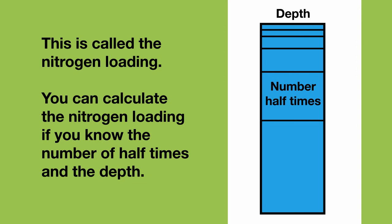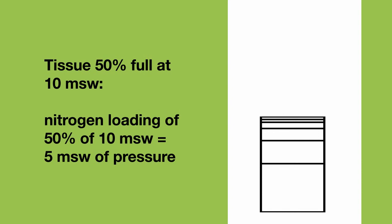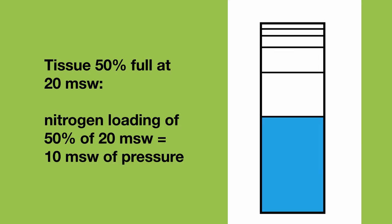Let's look at an example of how this works. A tissue that is half full, so 50%, at 10 meters of seawater has a nitrogen loading of 50% of 10 meters of seawater, so 5 meters of seawater pressure. That same tissue, also half full at 20 meters of seawater, has a nitrogen load of 50% of 20 meters of seawater, so 10 meters of seawater pressure.